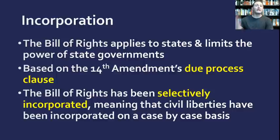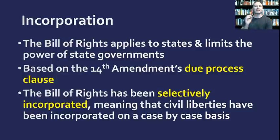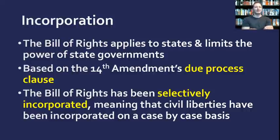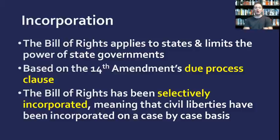The Bill of Rights originally said the federal government can't take away your speech, right to bear arms, or protection from illegal searches. With incorporation, the Supreme Court is saying the Bill of Rights also stops states from doing those same things. After a right is incorporated, state governments can no longer take it away — meaning before it was incorporated, they could. This is a major shift in the balance of power between states and the federal government. Where does this come from? It's based on the 14th Amendment's due process clause.